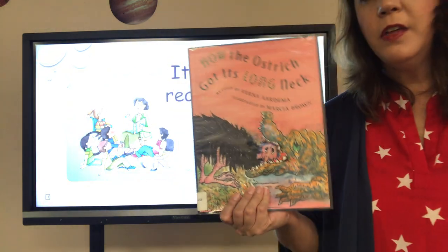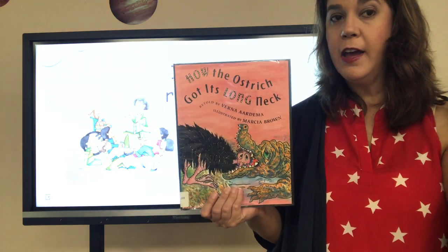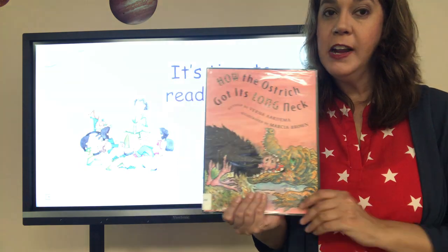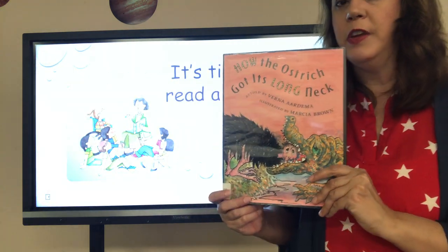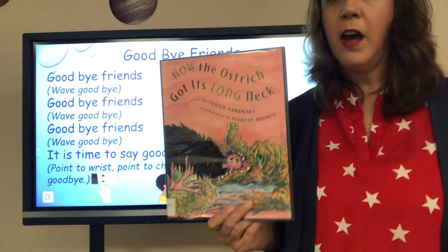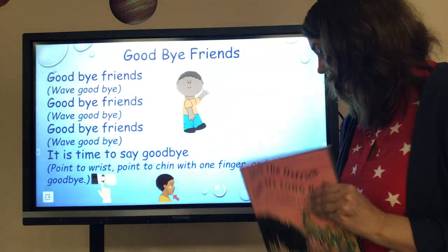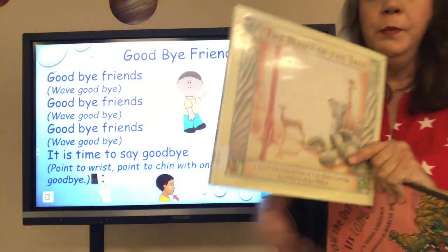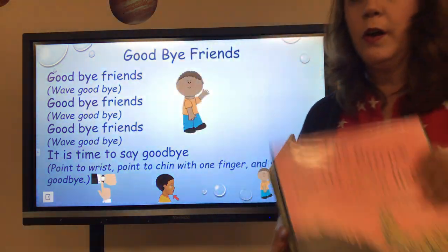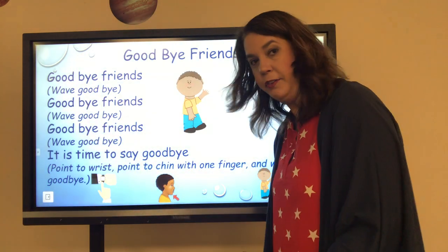So how did the ostrich get its long neck? Well, the crocodile asked several different animals to help him, but they all refused. The ostrich finally felt sorry for him and helped him out — and that's how his neck got so long. These books will be ready Monday — you can check out The Name of the Tree or How the Ostrich Got Its Long Neck. For now, let's do our goodbye song. And remember, it's not goodbye, because Miss Mary will be back next week.